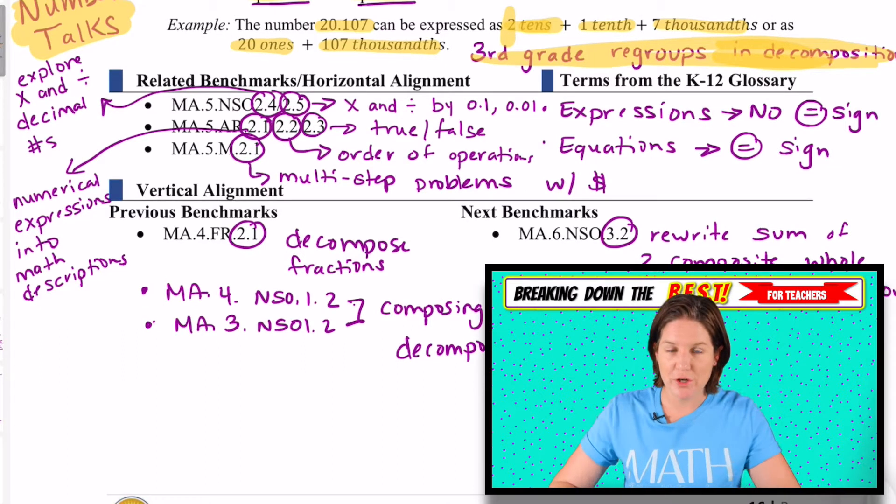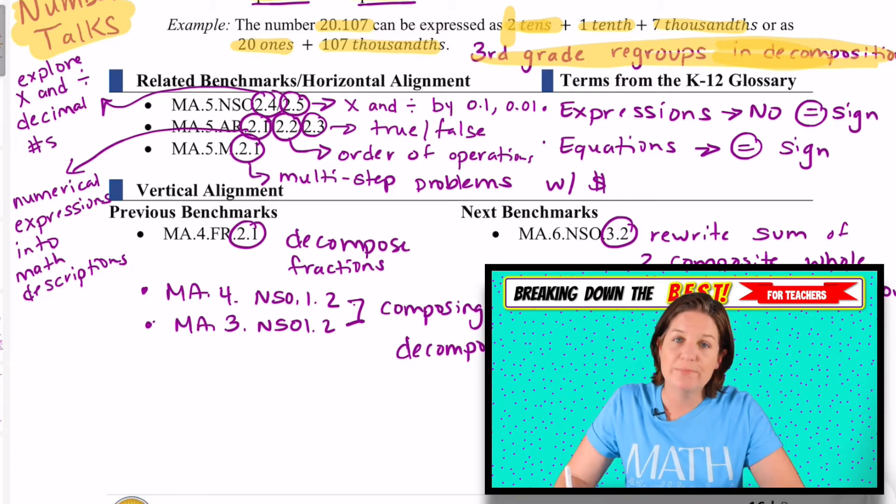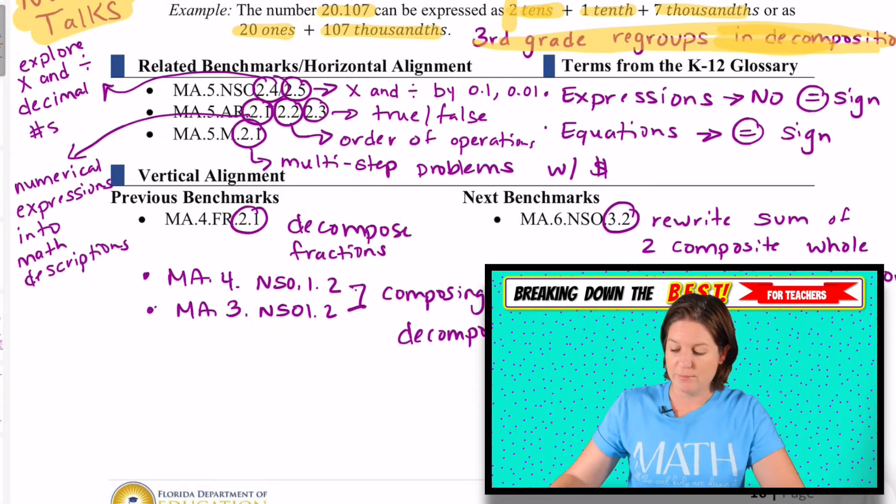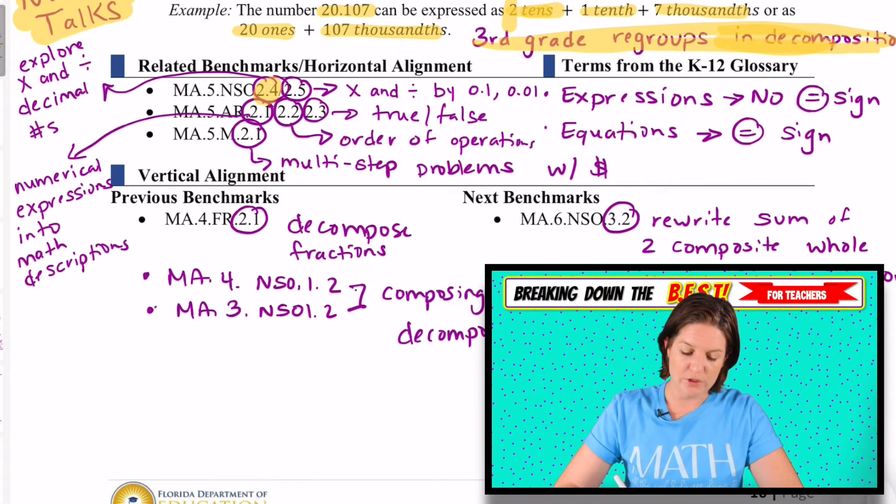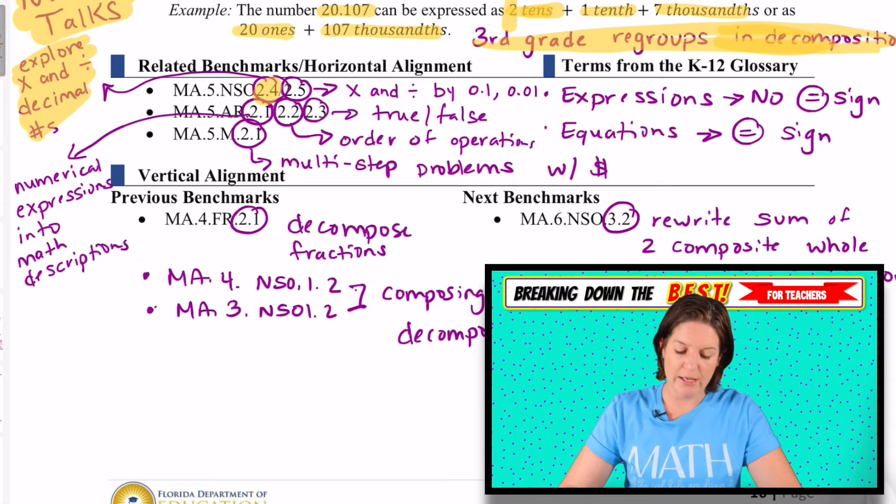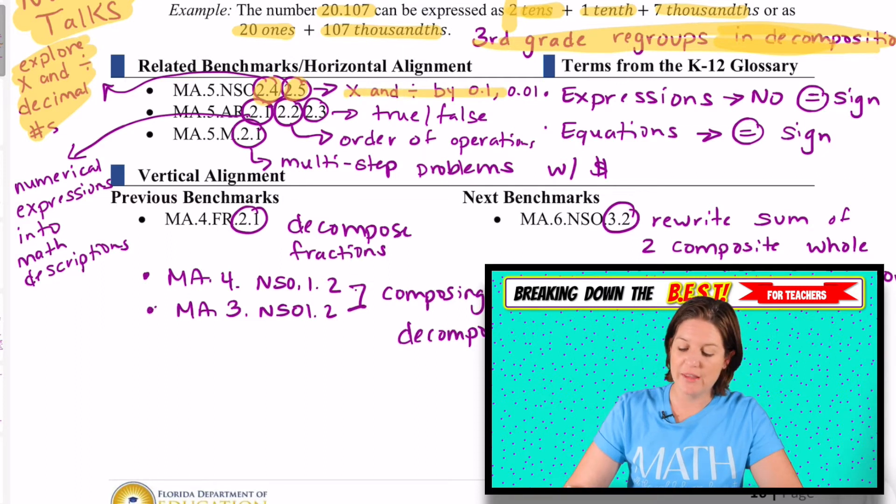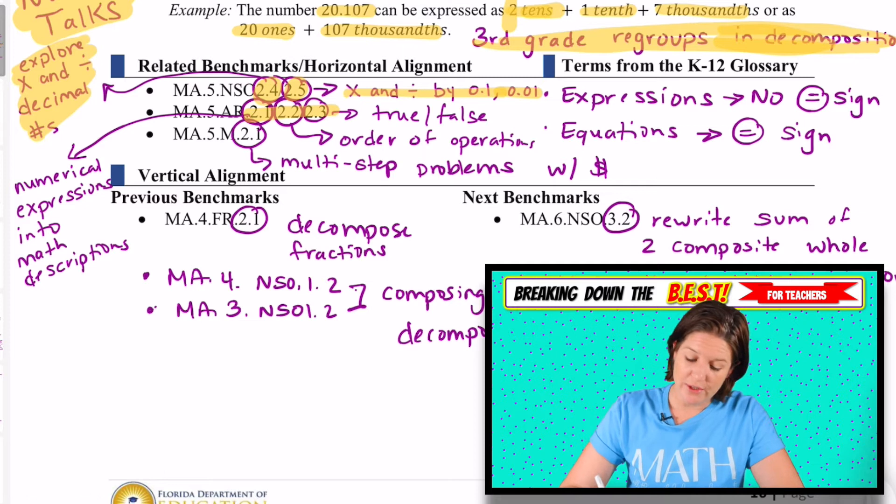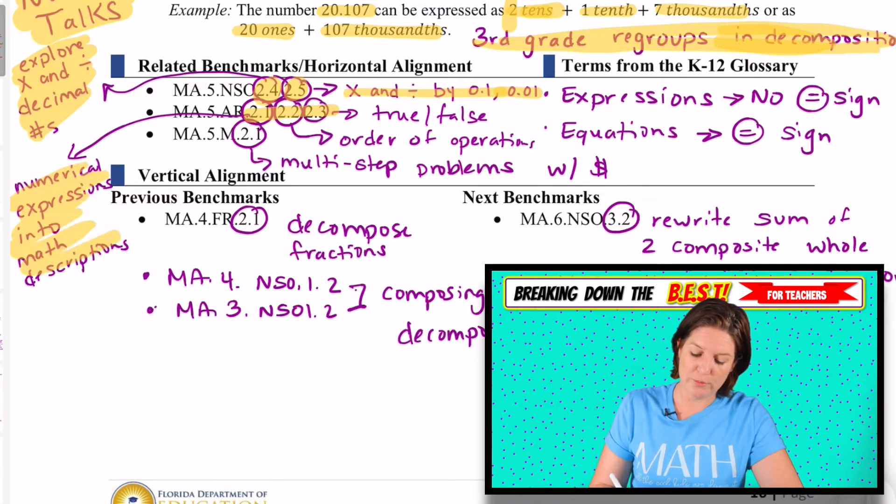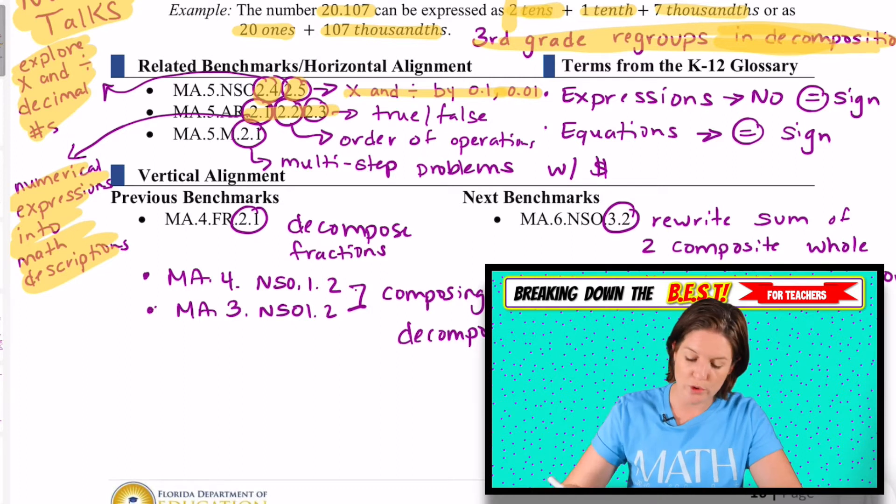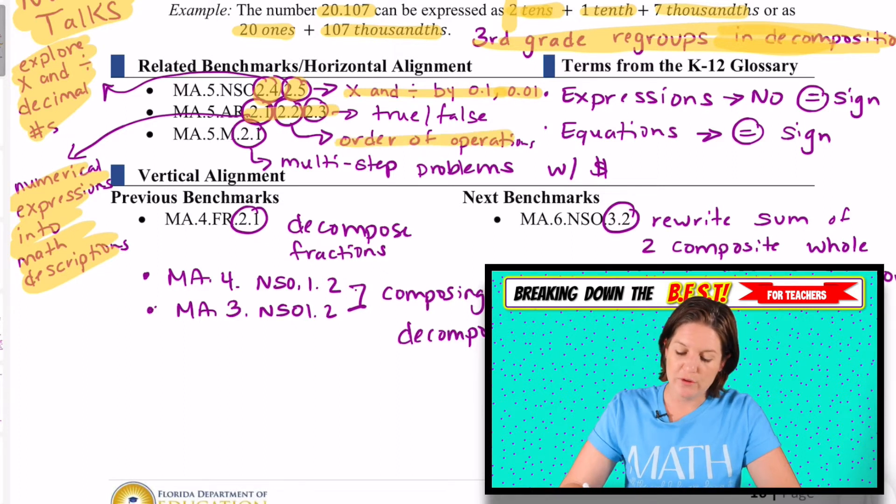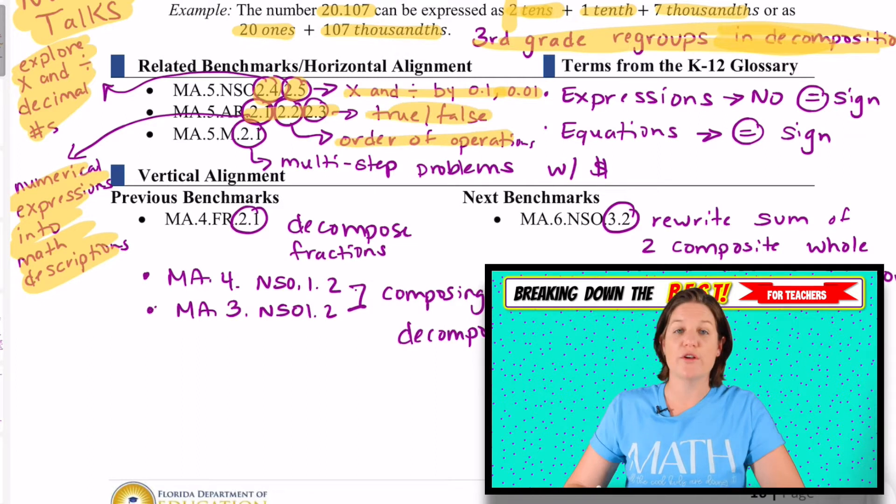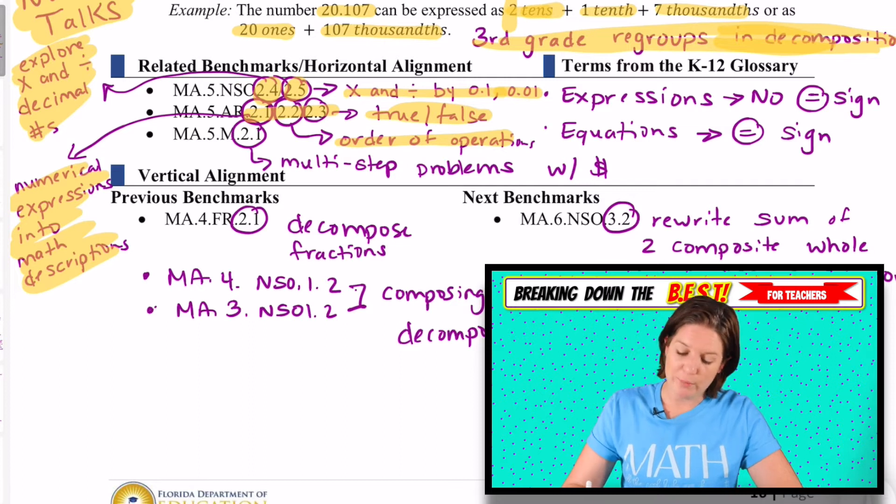Just like in the last standard that I filmed, the NSO.1.2 for fifth grade, these are the horizontal alignments, the other standards that will benefit from the standard in fifth grade. I've noticed that these same standards are presented over and over again, so I'm just going to list them out for you and tell you which one each one is. But what you can do is if you want to learn more, find the standard with that video where we break that particular video down. So NSO 2.4 is exploring multiplication and division of decimal numbers. 2.5 is multiplying and dividing by one-tenth and one-hundredth. All of these standards right here have to do with the order of operations.